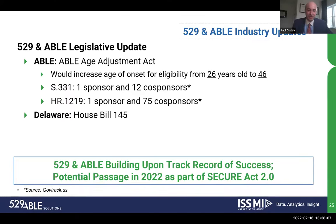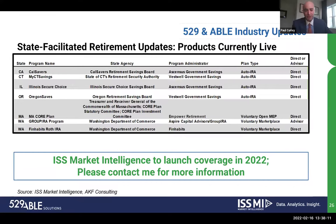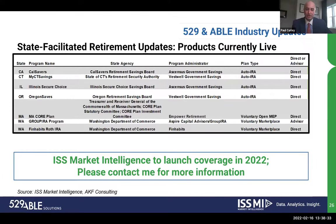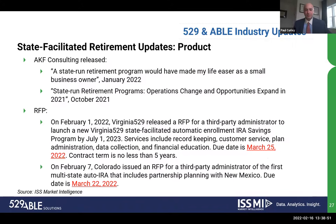We've been covering state-facilitated retirement products more recently. We're looking to launch coverage of these products in 2022. The current live programs include California, Connecticut, Illinois, Oregon, Massachusetts, and Washington. There are slight variations between the first four and the last three. We've been having a number of calls to learn more about the space. Thanks to AKF Consulting and Andrew Feirstein for helping verify this table of current live programs. They've released several white papers and blogs on the subject.